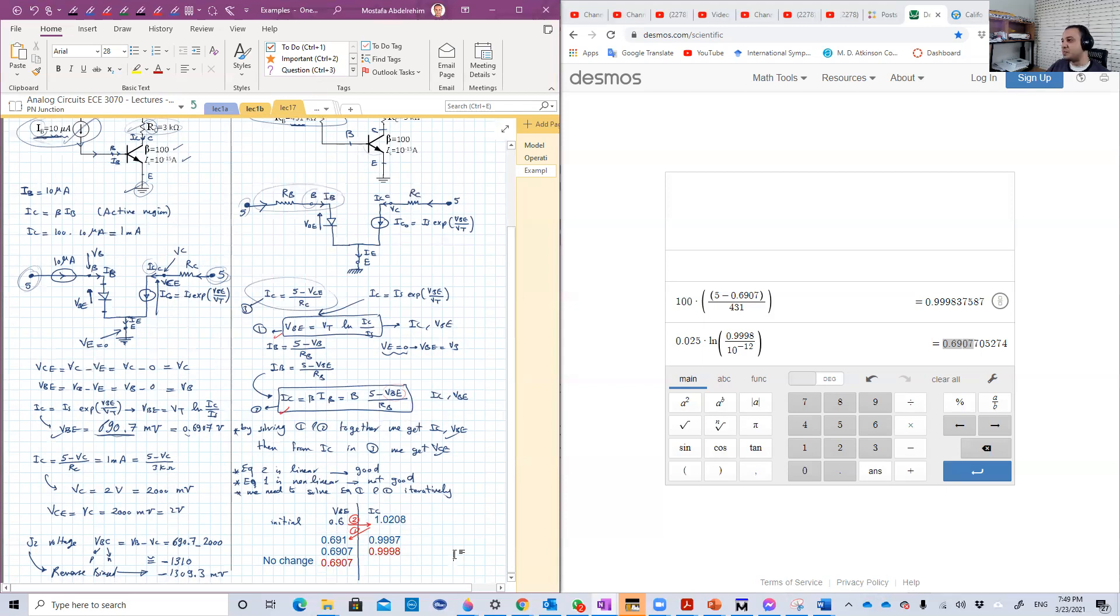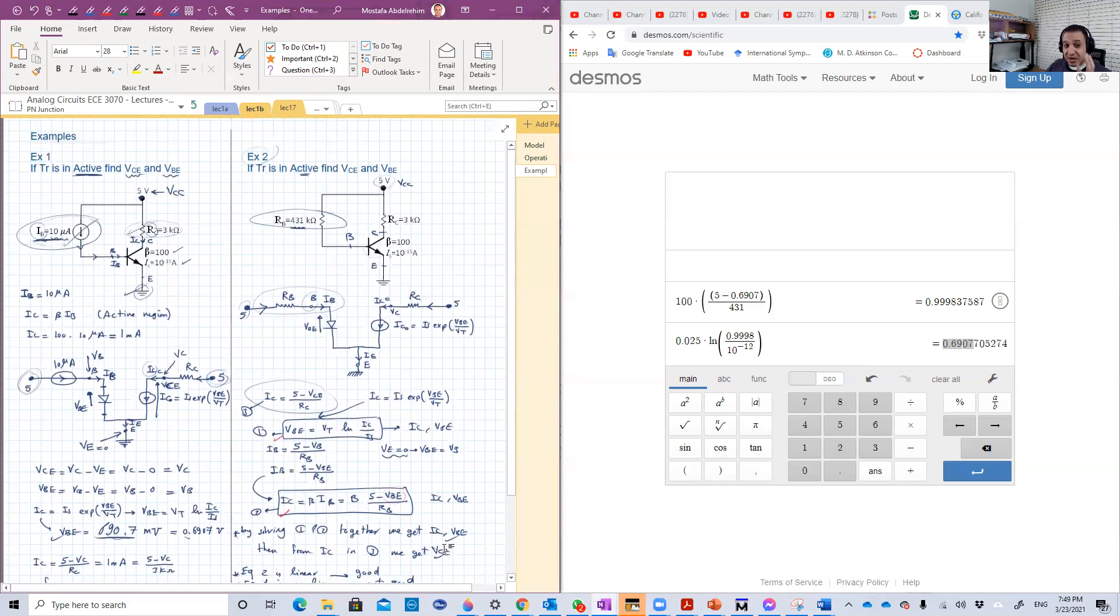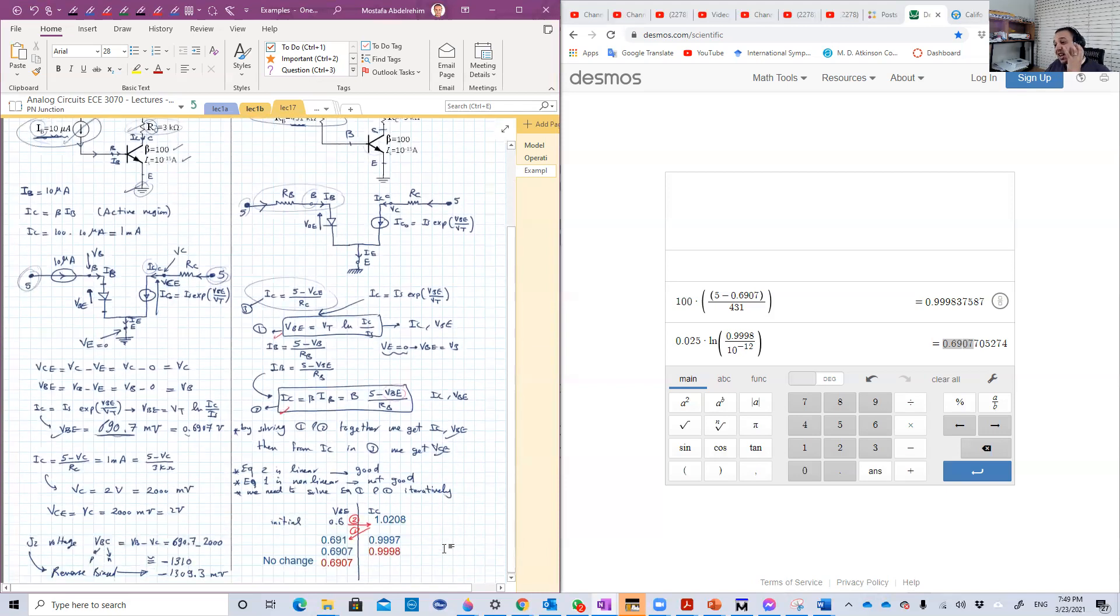Okay guys, that was basically how to solve transistor circuits using the iterative solution and the exponential model. As we see, it's cumbersome. It's not that hard, but it's not that easy. And we need some models, more approximate models we can say, so that we can solve such a question or such a circuit in an easier way. Okay guys, thank you very much for watching this video, and see you in the next video. Bye-bye.